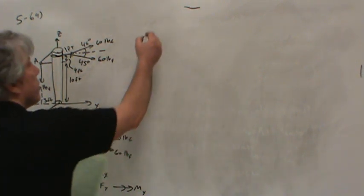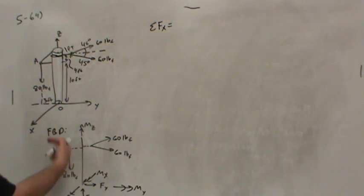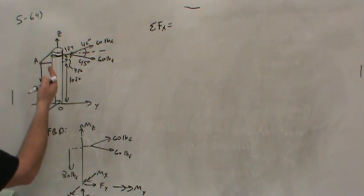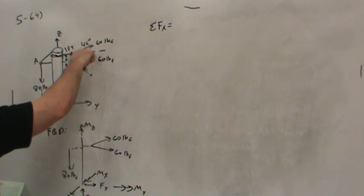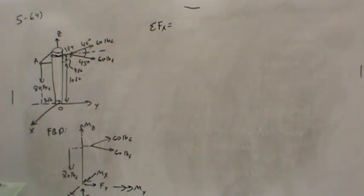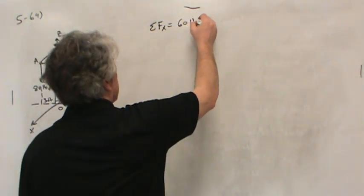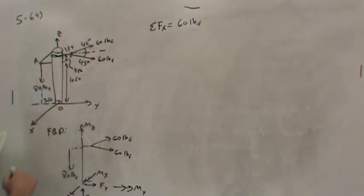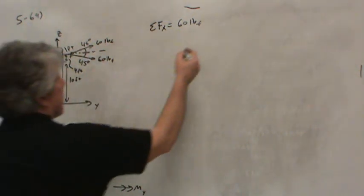So the first thing I'm going to do is sum forces in the X direction, just because it looks easy. In the X direction, the force at A doesn't contribute. And these two, you can tell that their horizontal components are going to cancel. So, writing that out mathematically, 60 pounds from this force, which has a component in the X direction, it'd be the sine side, so sine of 45 degrees,